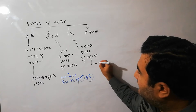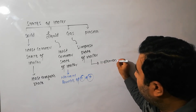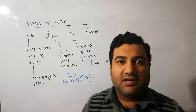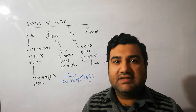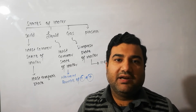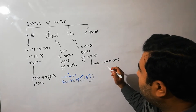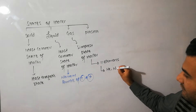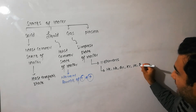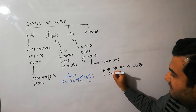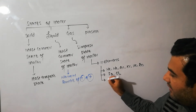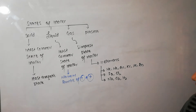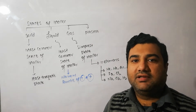There are 11 elements that exist in the gaseous form in the periodic table. As far as compounds are concerned, there are many — for example carbon dioxide, HCl, and others. But for elements of the periodic table, only 11 exist in gaseous form. Six of them are the noble gases: helium, neon, argon, krypton, xenon, and radon. Two are the halogens: fluorine and chlorine. The remaining three are from different families: nitrogen, oxygen, and hydrogen.